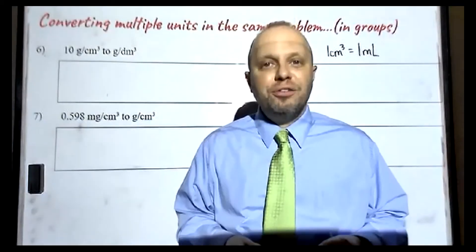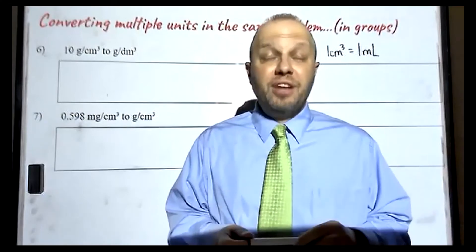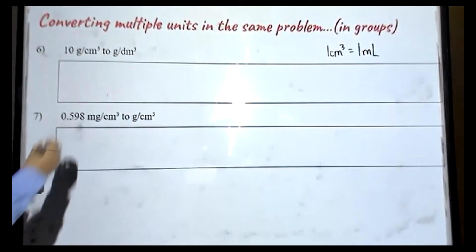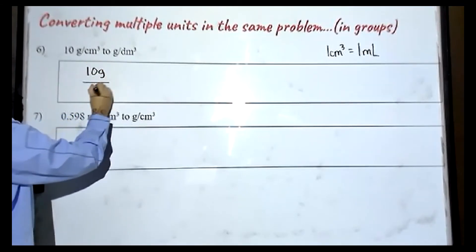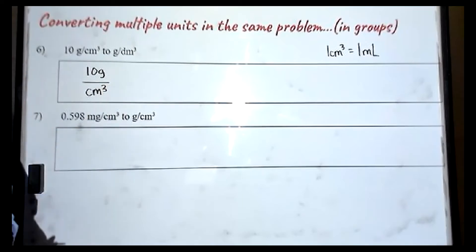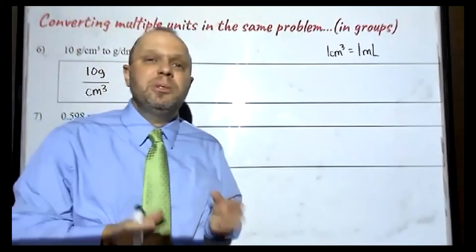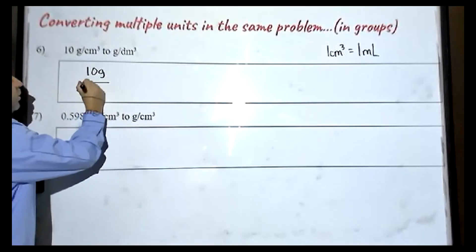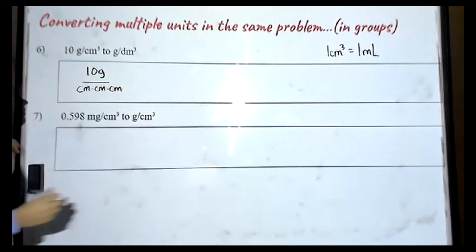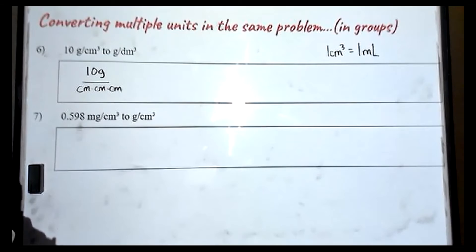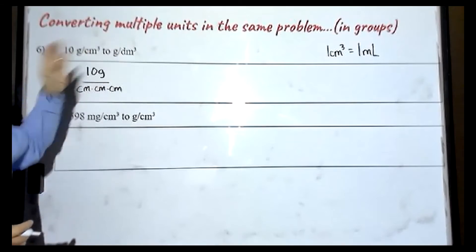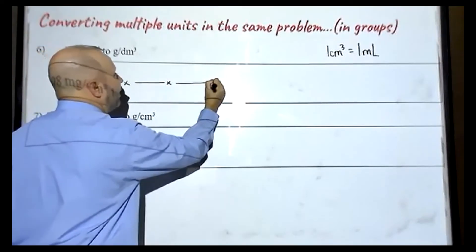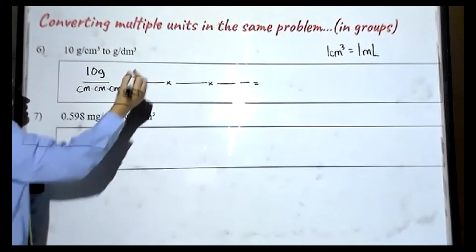I trust that all of you paused the video and worked on numbers six through 10. We're going to go over those now and see how we did. In question number six, we have 10 grams over centimeters cubed. Remember that centimeters cubed — a cubic unit — those are the tricky ones, so you have to do something special here. I'm going to erase centimeters cubed and write out what it actually means: centimeters times centimeters times centimeters. So I'm going from grams — I don't have to change that — and centimeters cubed to decimeters cubed. I'm going to do this over three fractions.